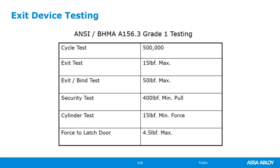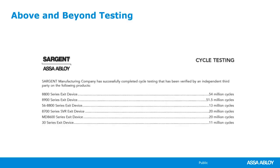Sargent has always done above-and-beyond testing. The 8800 series exit device has been tested to over 54 million cycles. The 8900 series has been tested to 51.5 million cycles. The 56-dash electric latch retraction device has been tested to 13 million cycles. The 8700 surface vertical rod has been tested to 20 million cycles. The MD8600 has been tested to 20 million cycles, and the 30 series exit device to 11 million cycles — all well above the 500,000 cycle minimum requirement.